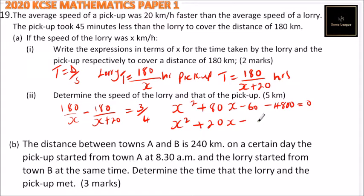That should be equals to 0. So you can simplify this and say x squared plus 20x minus 4800 is equal to 0.